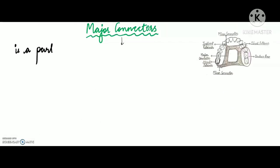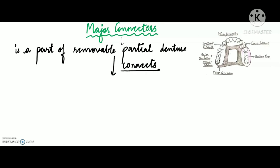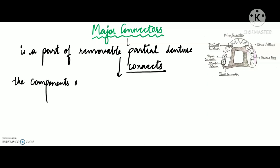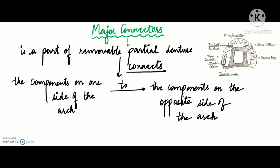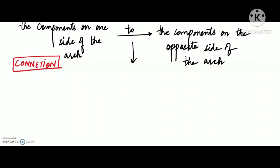So what is a major connector? A major connector is a part of the removable partial denture which connects the components present on one side of the arch to the components present on the opposite side of the arch. As the name itself tells — major connector — its first major function is connection.